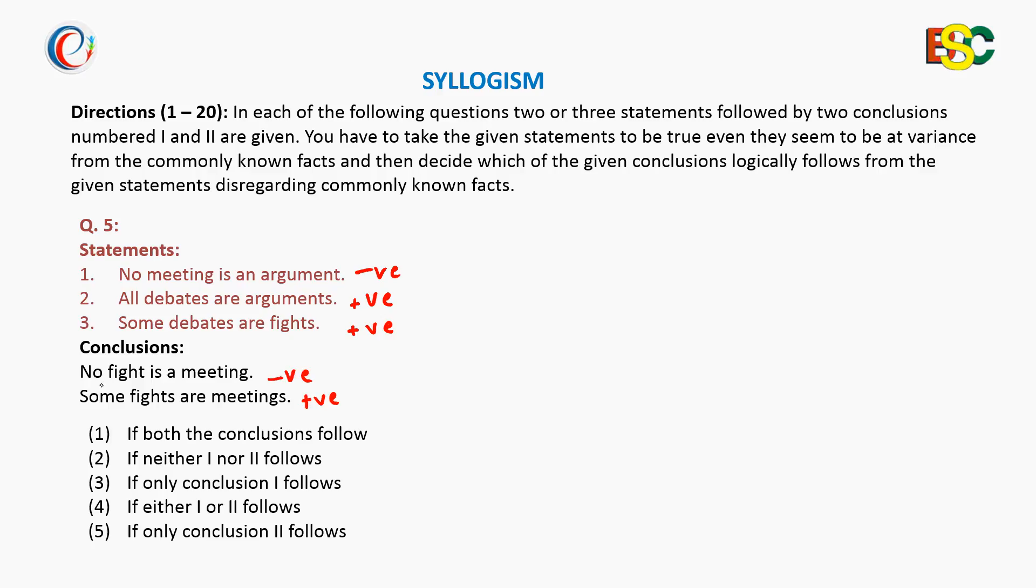Checking conclusion 1, it is negative in nature and can be derived from all three statements. Fight is in statement 3, meeting is in statement 1, and there is the adding word argument in statements 1 and 2, and debate in statements 2 and 3. We know that 1, 2, 3 statements are a set of negative and positive which leads to a negative conclusion. So rule 1, which is of nature, is passed here as the nature matches.